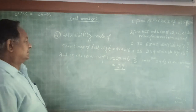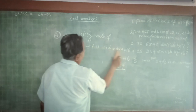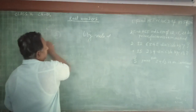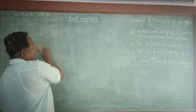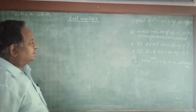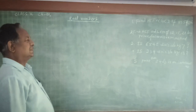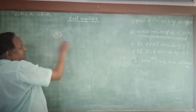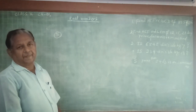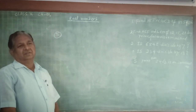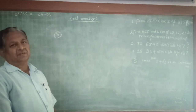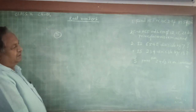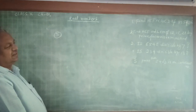Now take problem number 5: Prove that 2 plus root 3 is an irrational number. To prove such type of question, we will follow the method of contradiction. We have to prove 2 plus root 3 is an irrational number.